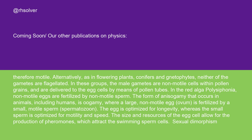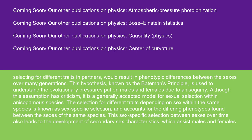Sexual dimorphism: anisogamy is a core element of sexual dimorphism that helps to explain phenotypic differences between sexes. Researchers estimate that over 99.99% of eukaryotes reproduce sexually. Most do so by way of male and female sexes, both of which are optimized for reproductive potential. Due to their differently sized and shaped gametes, both males and females have developed physiological and behavioral differences that optimize the individual's fecundity. Since most egg-laying females typically must bear the offspring and have a more limited reproductive cycle, this typically makes females a limiting factor in the reproductive success rate of males in a species.